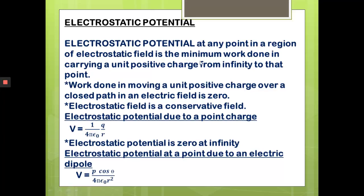Work done in moving a unit positive charge over a closed path in an electric field is zero, because the electrostatic field is a conservative field. Next, the electrostatic potential due to a point charge — this formula is very important: V equals 1 over 4πε₀ times Q over R.